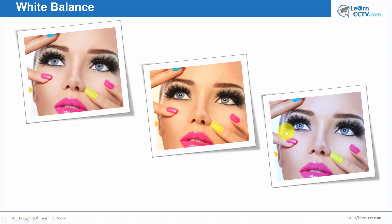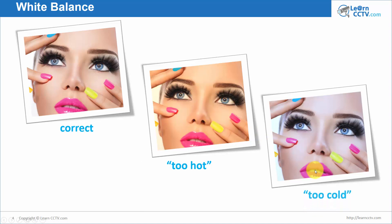Here is an example of different colors — the same model with different skin tones. Here is the correct white balance, the real image. Here the image is too hot, meaning too yellowish. And here the image is too cold — more towards blue. That's why colors and white balance are represented by color temperature. Too high a color temperature makes the image too hot, and incorrect lower temperature makes it too cold, more towards blue.